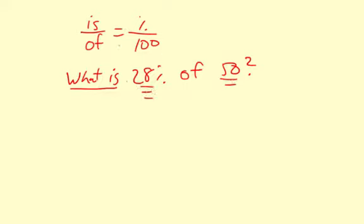You put all this information in the proportion and then you can solve to answer the question. So the is we don't know, so I'm putting x for that divided by of is the 50, equals the percent is 28, and then the 100 is 100.